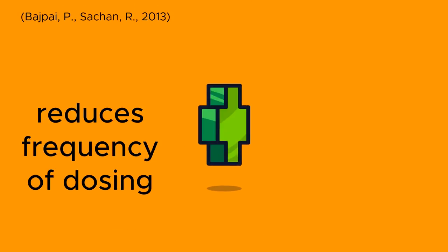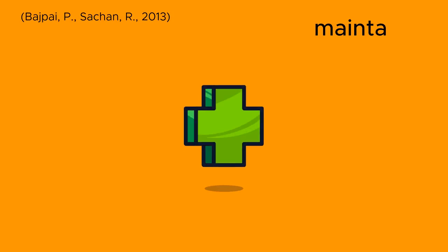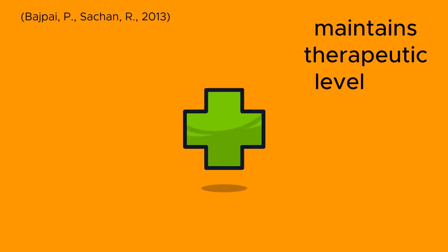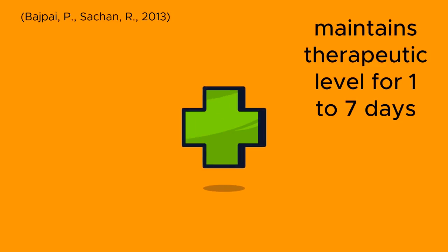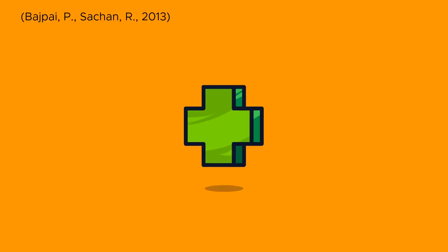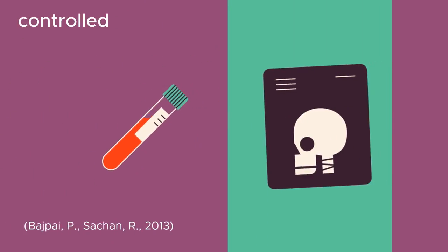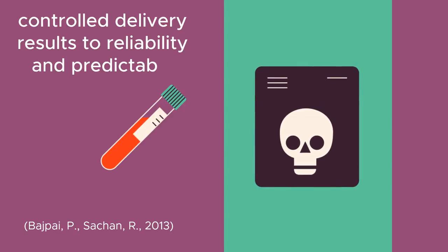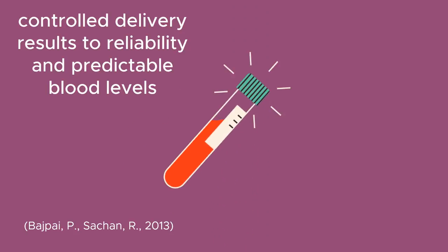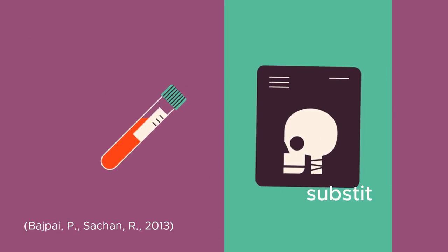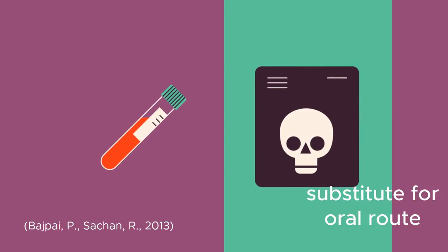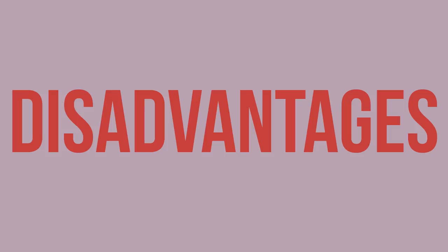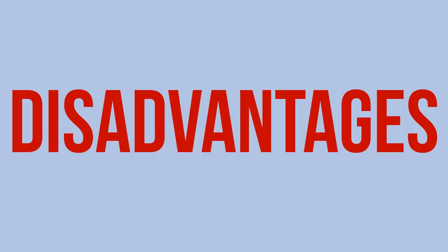TDDS reduces the frequency of dosing and maintains a therapeutic level for one to seven days. Controlled delivery results in reliable and predictable blood levels, making it a suitable substitute for the oral route.